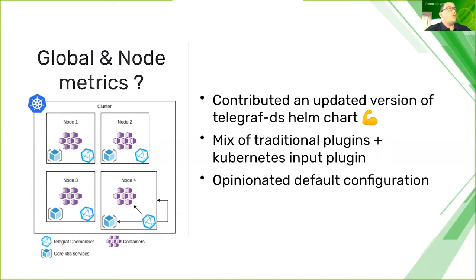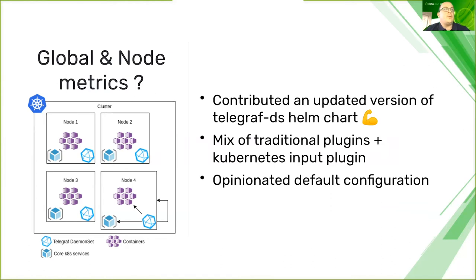The DaemonSet configuration is a mix of traditional plugins like disk, system, CPU, and memory, plus the Kubernetes input plugin, which provides metrics about namespaces, pods, and containers — memory, CPU, and so on. This gives you good knowledge about what happens within your nodes. The configuration is fairly opinionated and strict so far — there's no way to extend it yet — but it should be good enough to provide all the metrics you need.